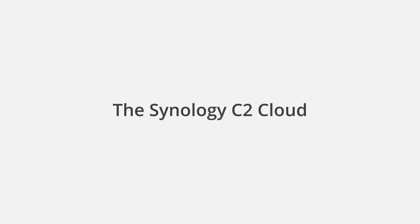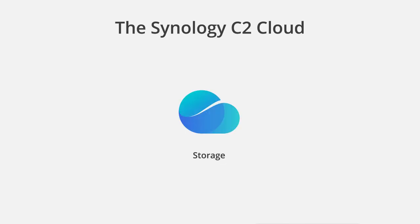The Synology C2 cloud ecosystem originally began as a backup destination for your Hyper Backup tasks, allowing you to back up your shared folder data, application config data, and even your DSM config data directly to the cloud. This backup destination has been modified and expanded and is now called Synology C2 Storage. You can still use it as a Hyper Backup destination, but you can also utilize it as a hybrid share folder directly in C2 cloud, leveraging the hybrid share service built into Synology DSM 7.